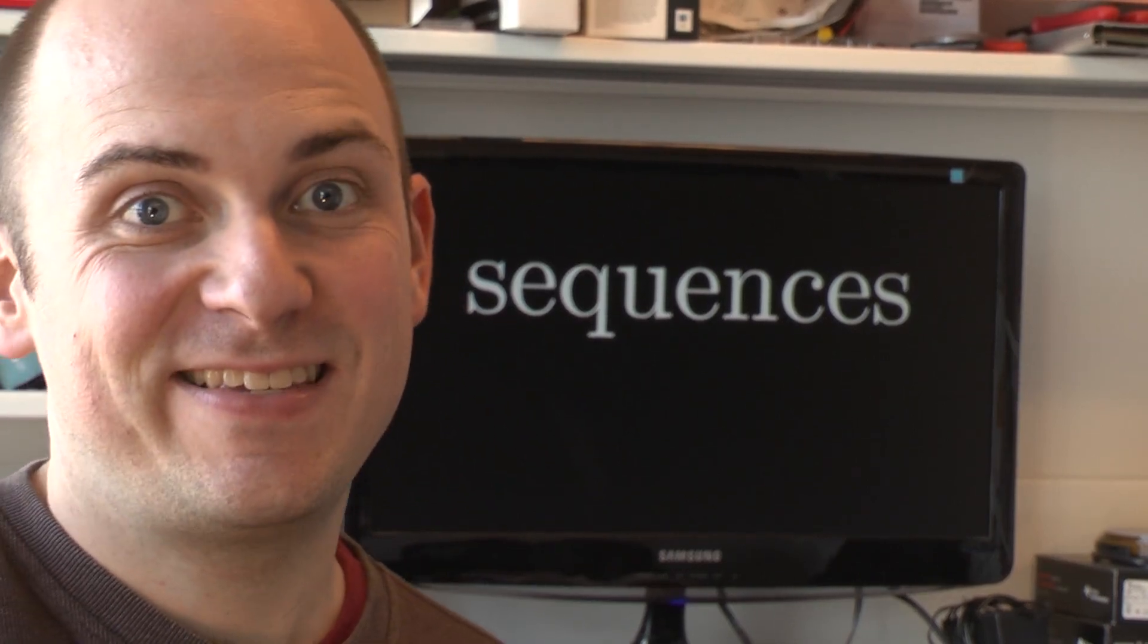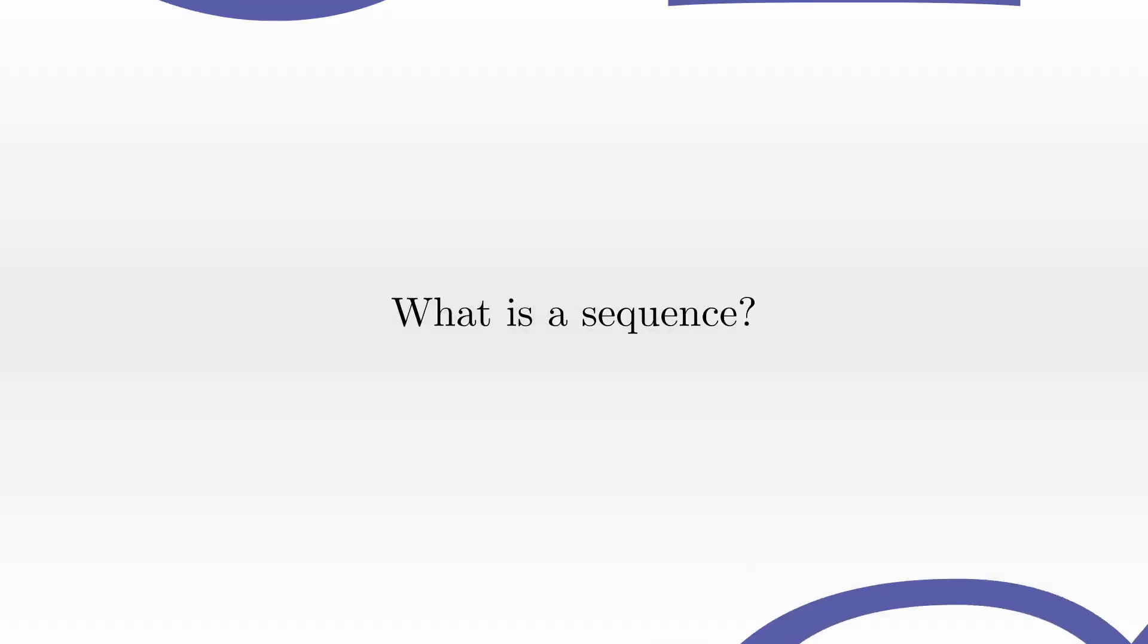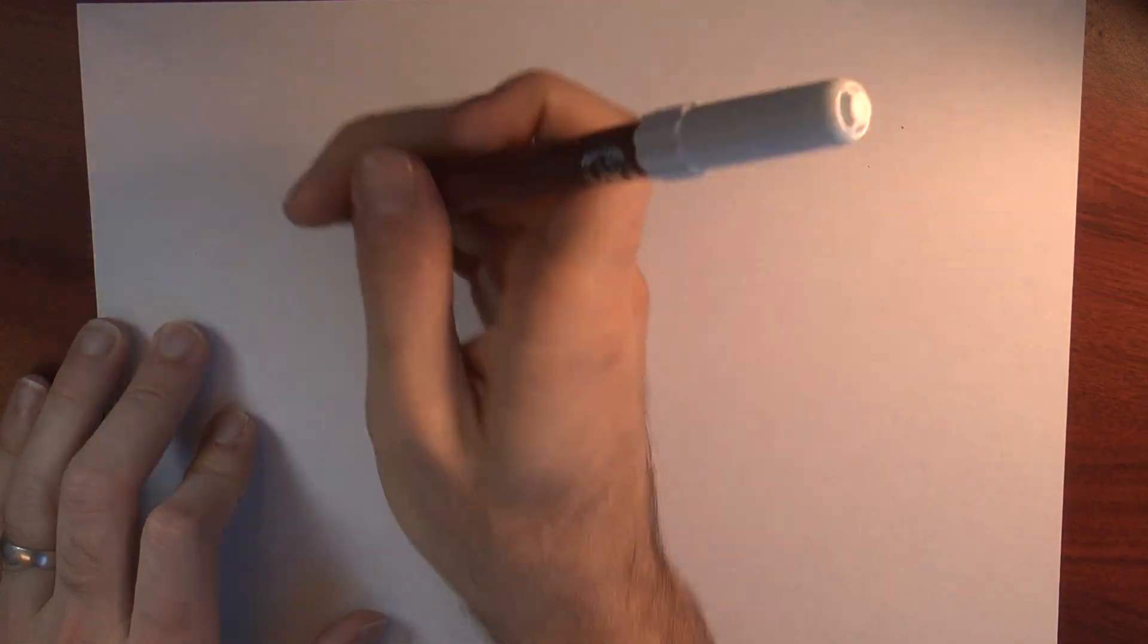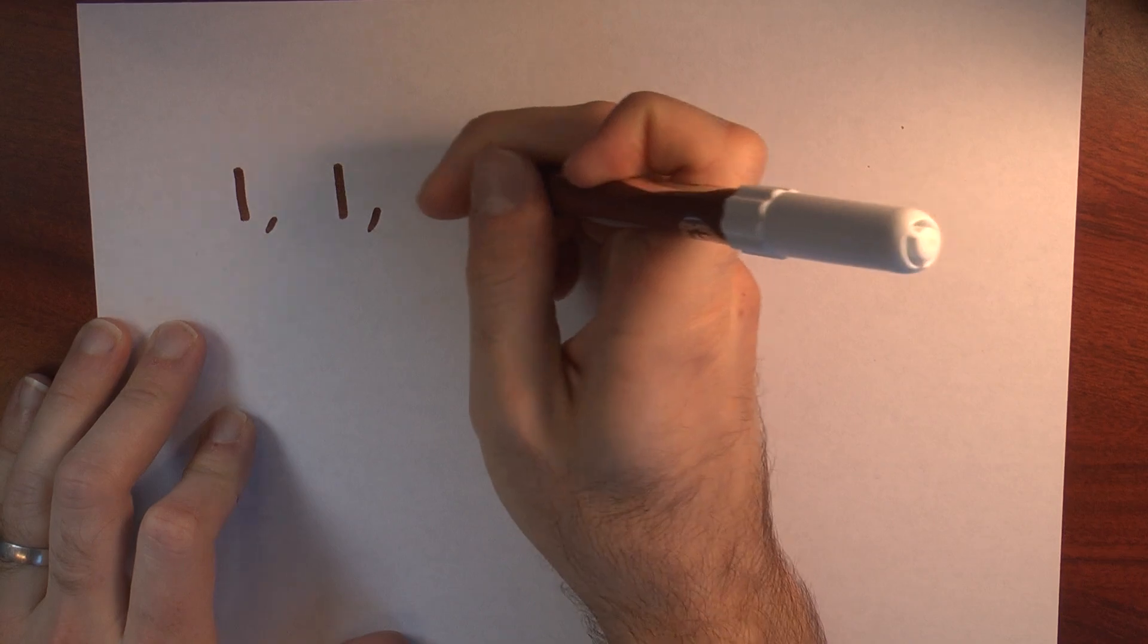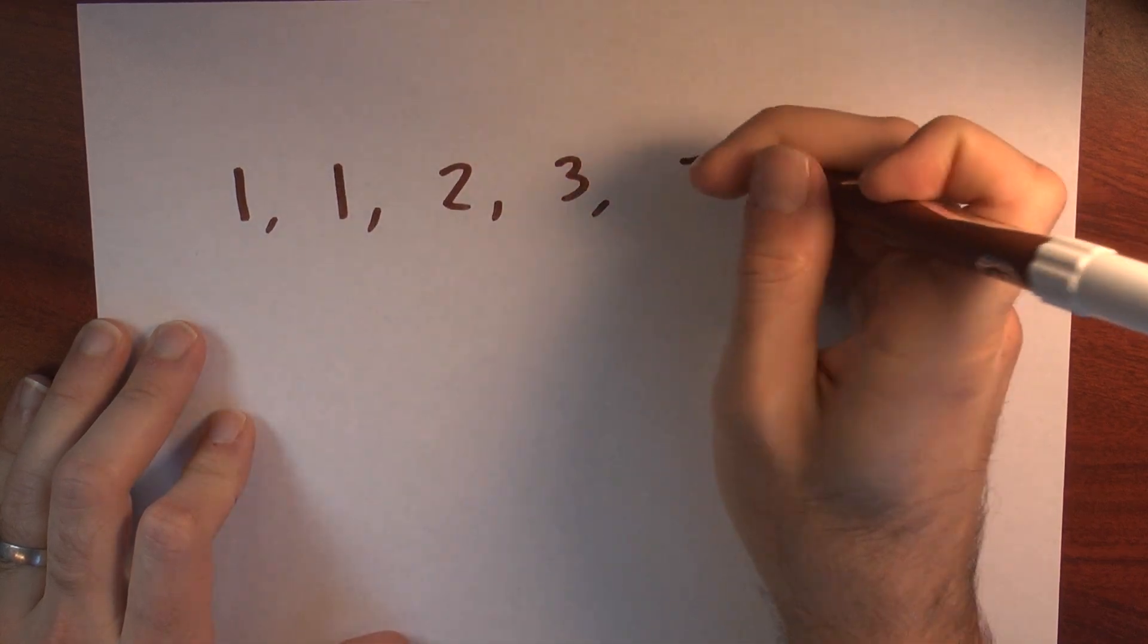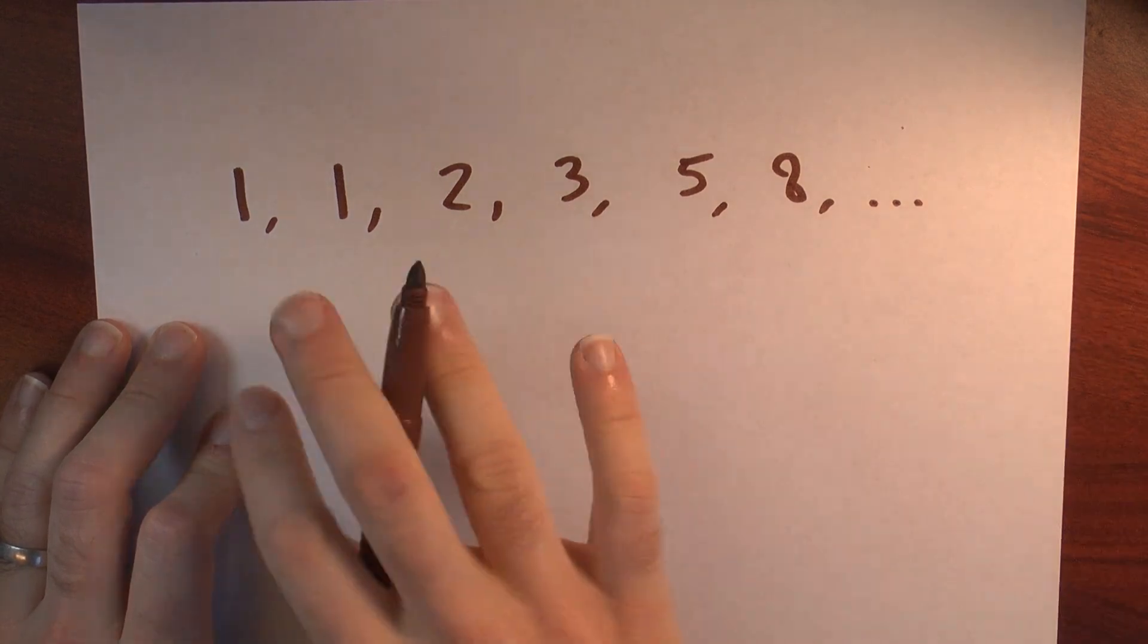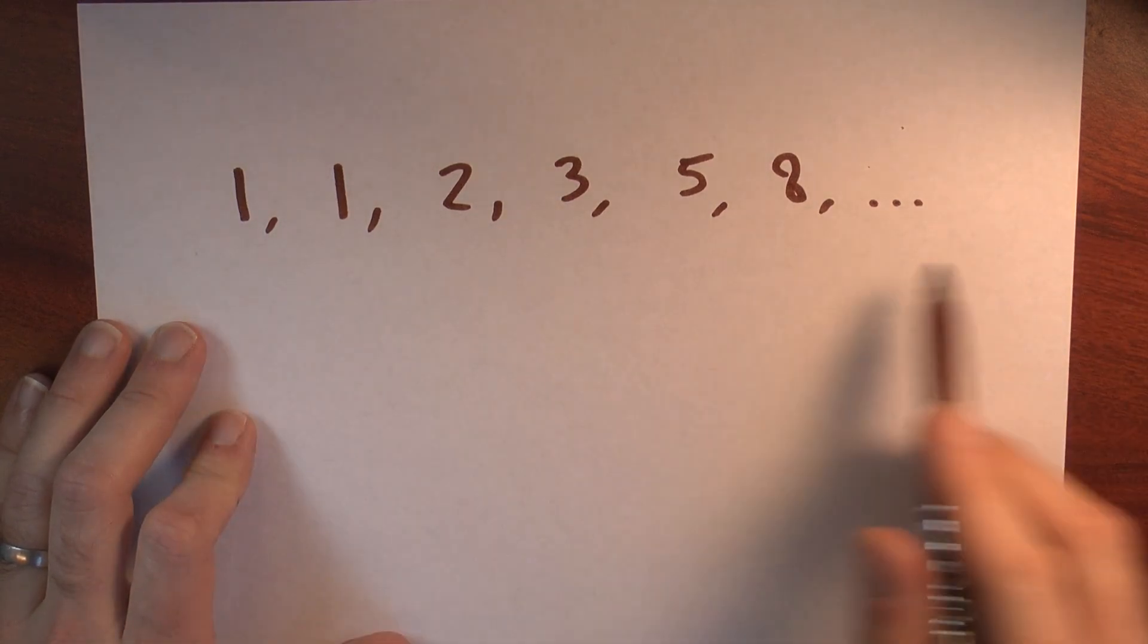What are sequences? A sequence is a list of numbers. For example, here's a sequence. It's just a sequence that goes 1, 1, 2, 3, 5, 8, and I'll write dot, dot, dot to remind you that the sequence goes on forever. It's an unending list of numbers.